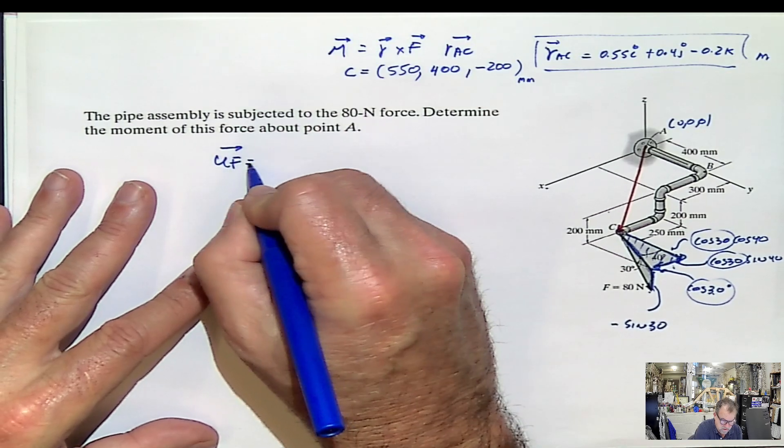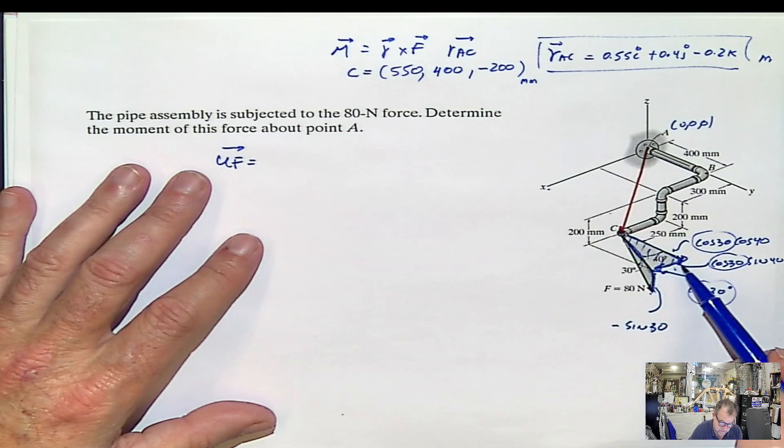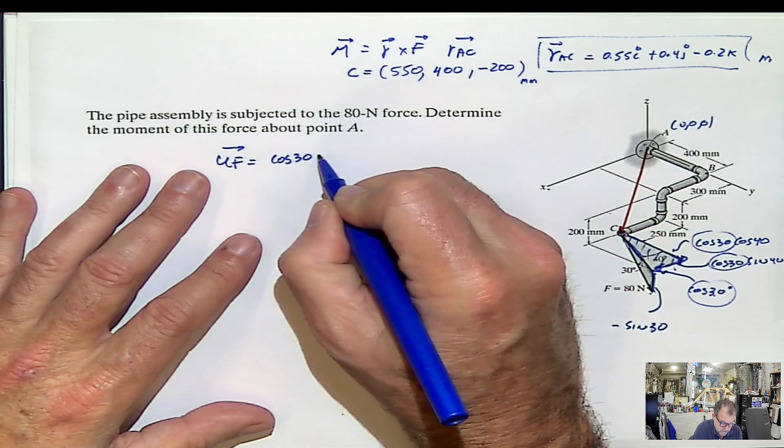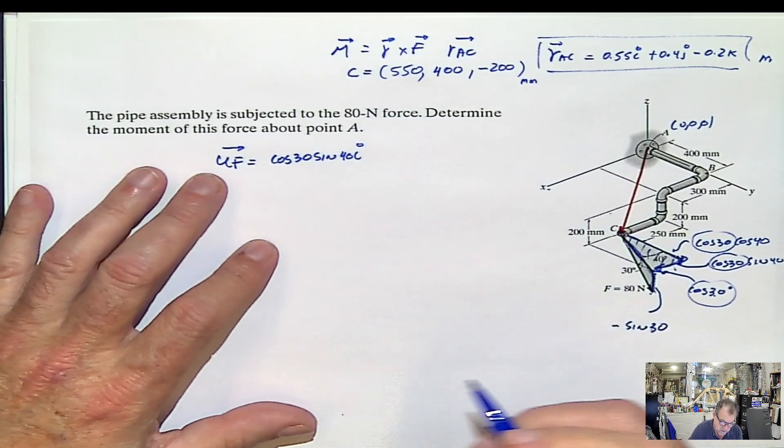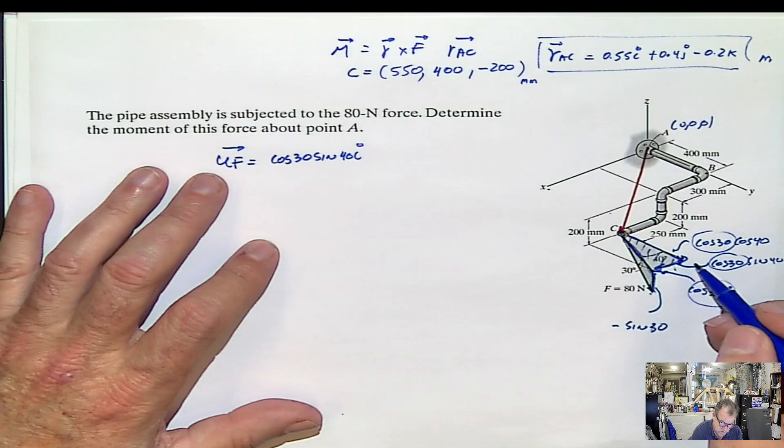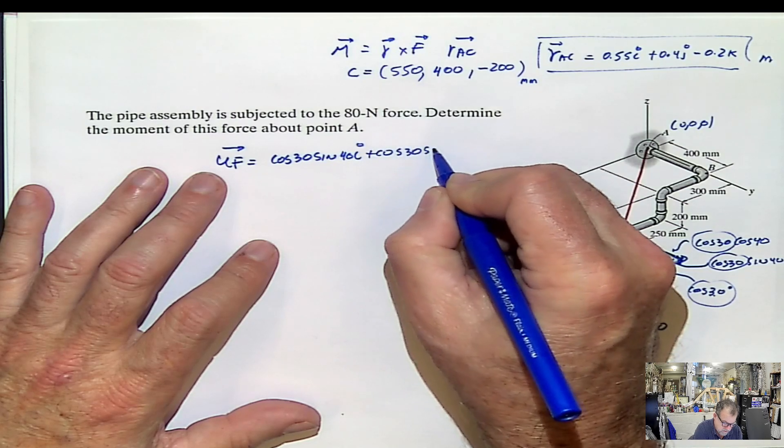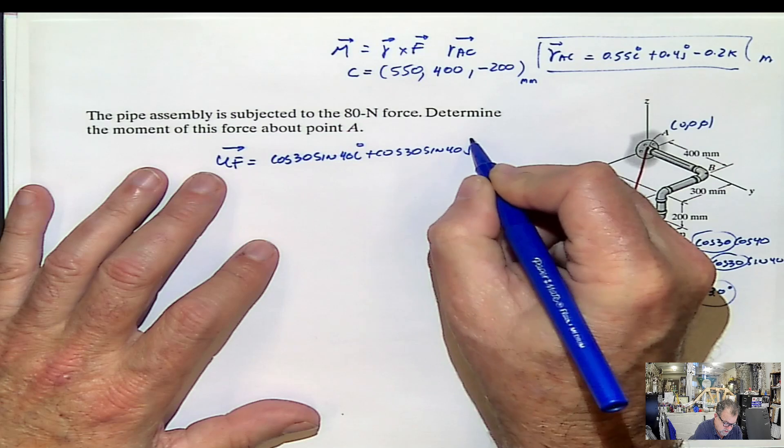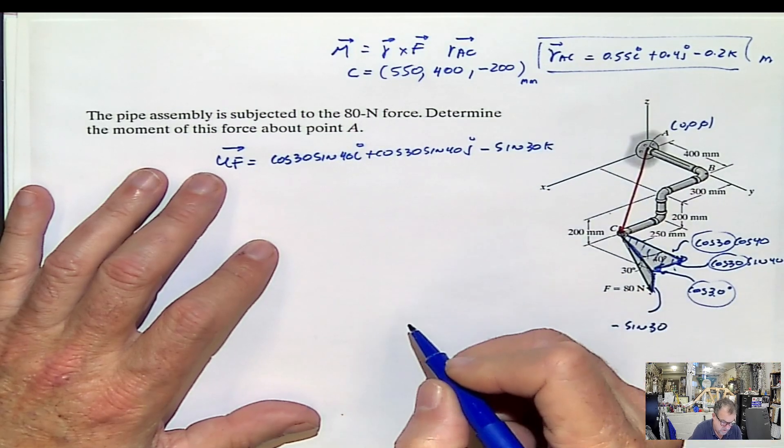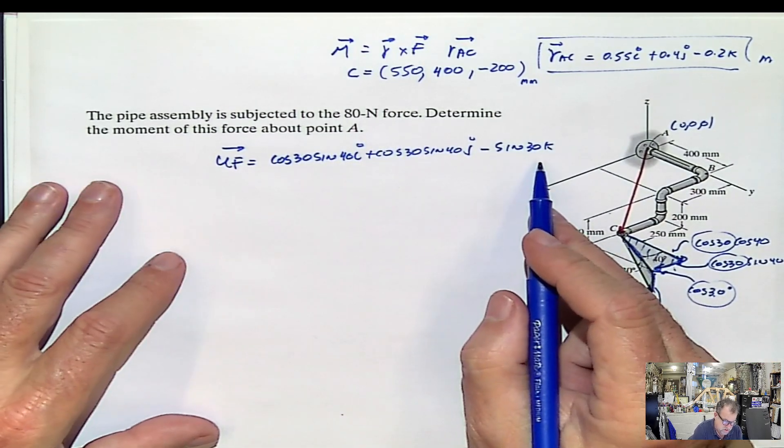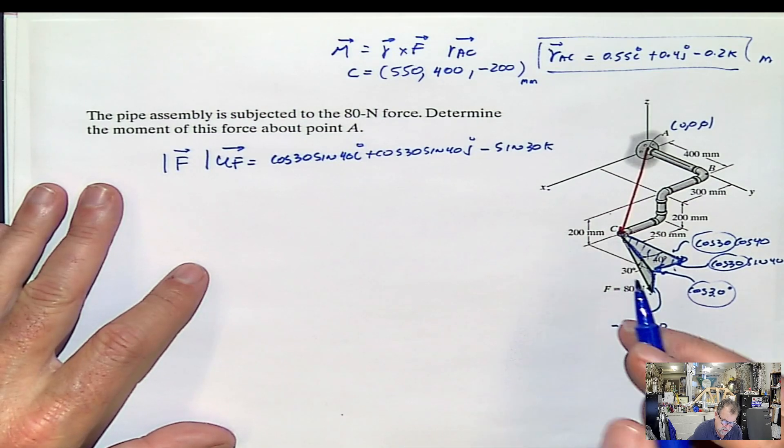So the unit vector of the force will be in the x direction, cosine 30 sine 40 i. And in the y direction, cosine 30 cosine 40 j. And this one will be negative sine 30 k. What do I do with this? I multiply this by the magnitude of the force. What is the magnitude of the force? 80 newtons.